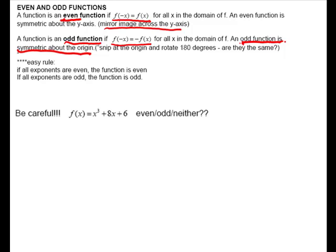Let's look at this example. f of x is x to the third plus 8x plus 6. Is it even, odd, or neither? The exponent of x cubed, this is 3, that's odd. That's odd, that's odd. But if you don't have a variable, remember that is x to the zero, which is even. So you have a mixture.